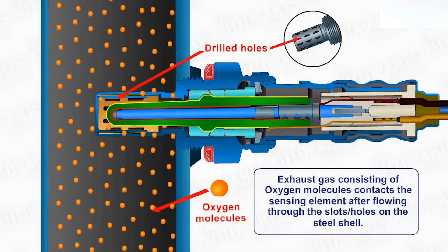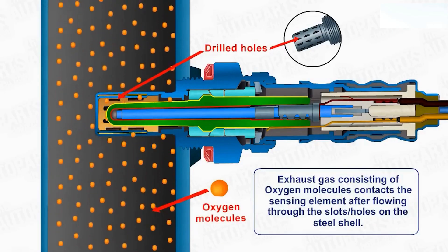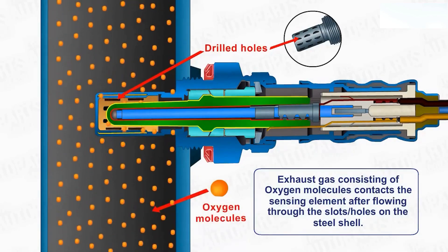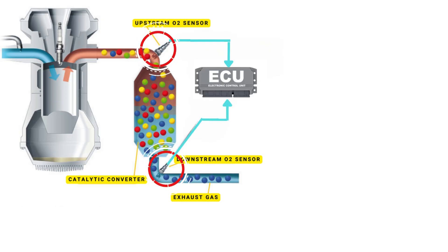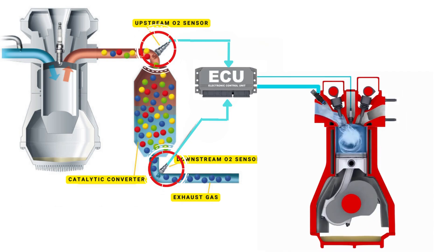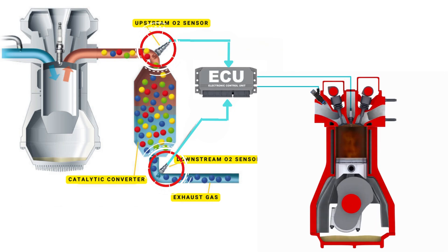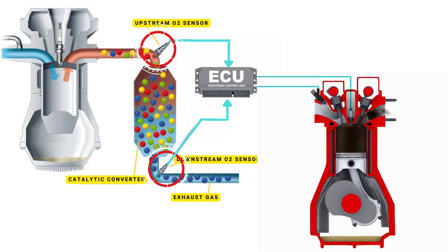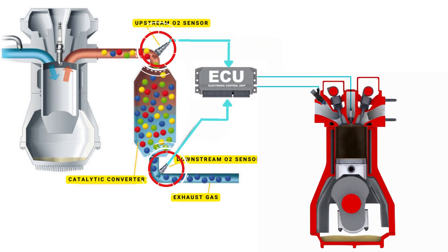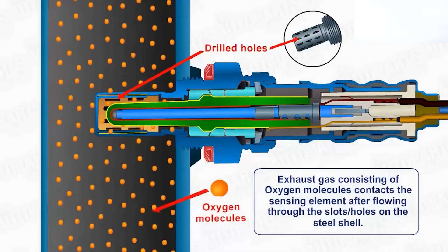Your vehicle's oxygen sensor plays a vital role in monitoring the oxygen content in the exhaust gases. It sends this data to the ECU, which then uses it to maintain the optimal air-fuel ratio. The ECU controls the air-fuel ratio by adjusting the timing of the engine's valves, allowing just the right amount of air and fuel to enter the combustion chamber.